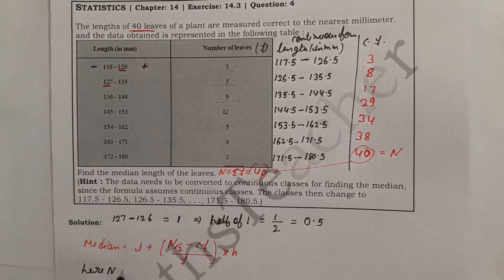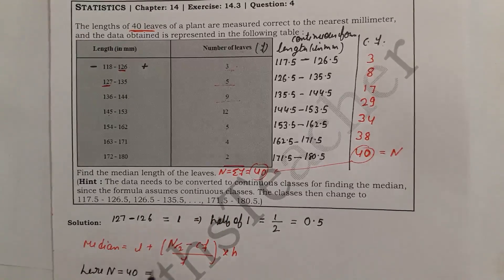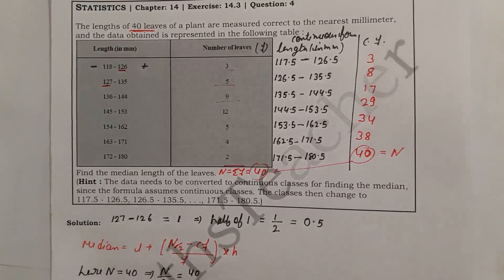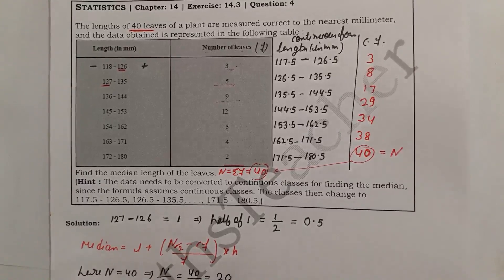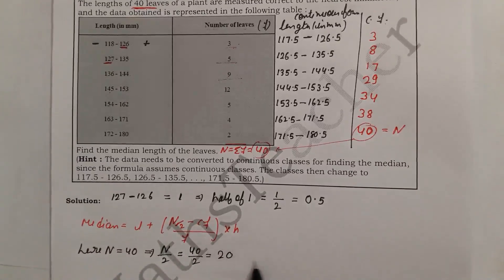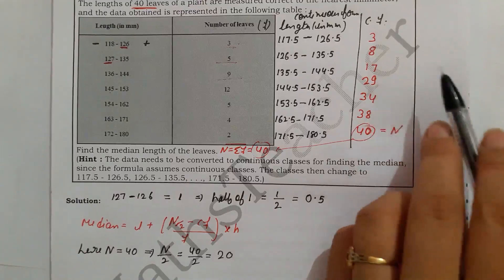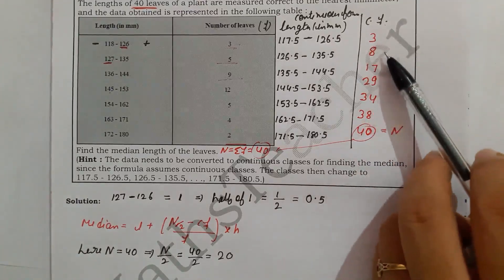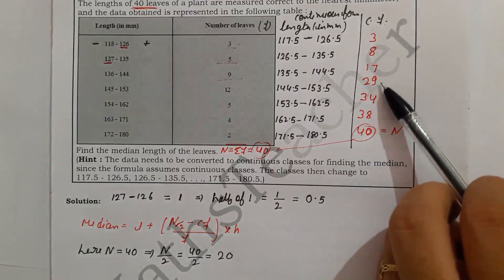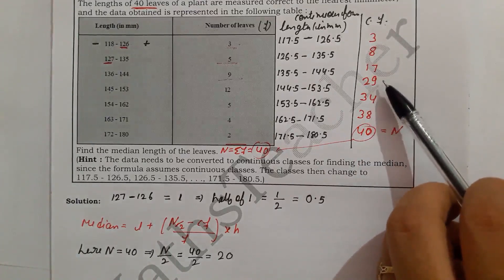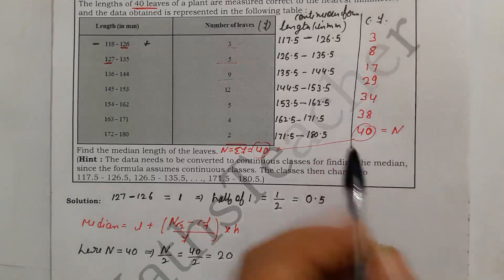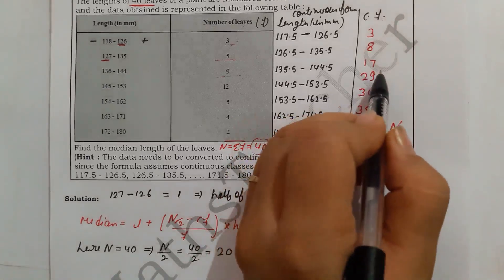Here n = 40, so n/2 = 40/2 = 20. Now we look for the cumulative frequency just greater than 20. The cf values are 3, 8, 17, 29... so 17 is less than 20 and 29 is the first value greater than 20.